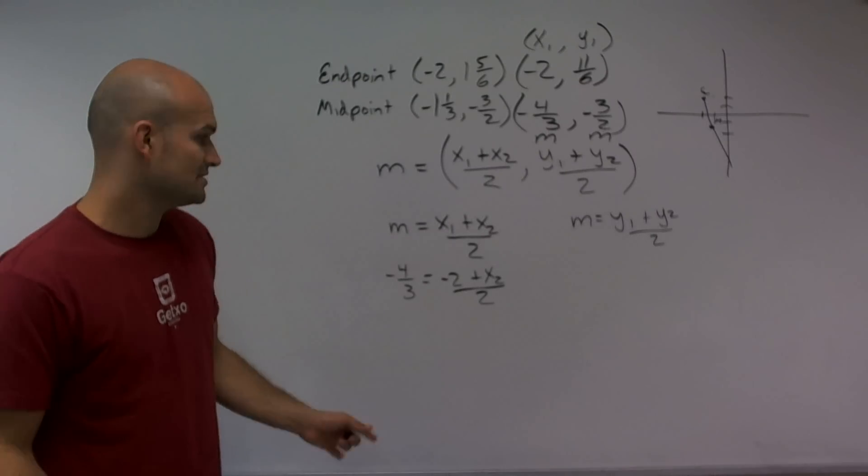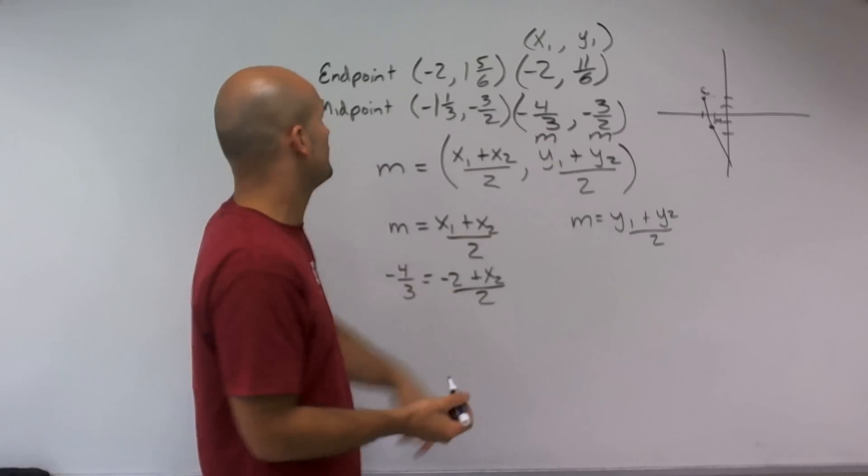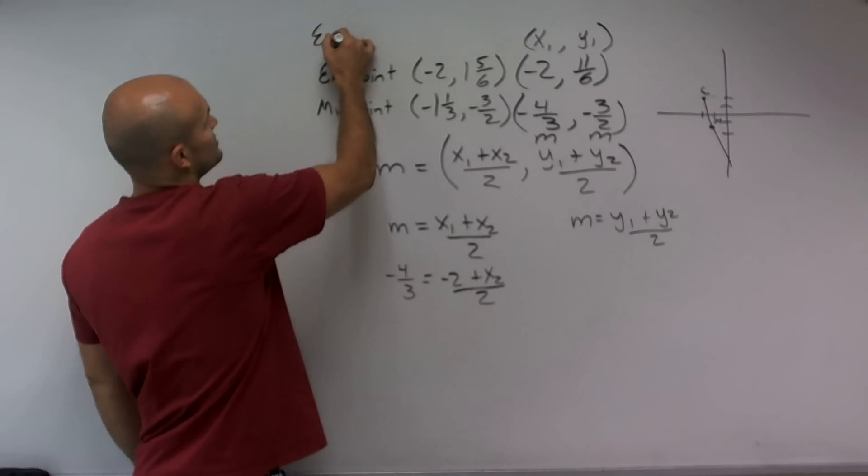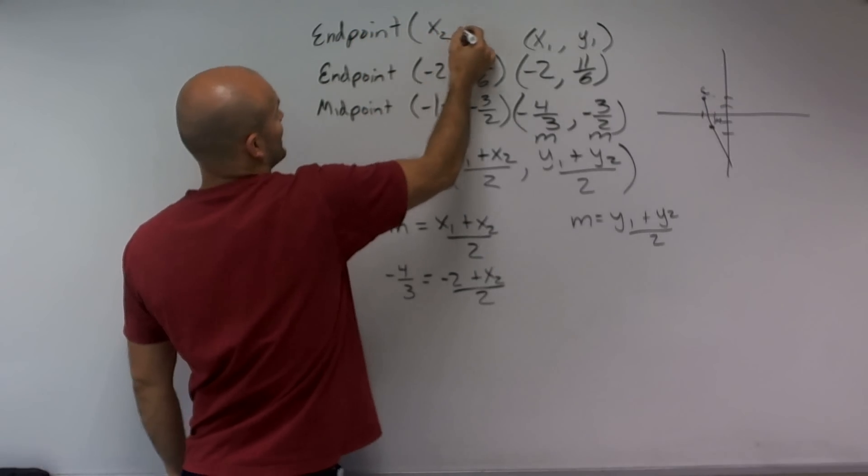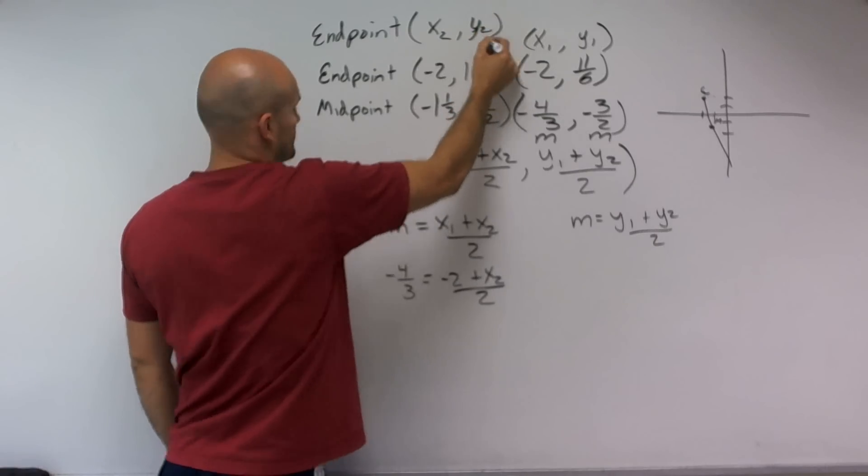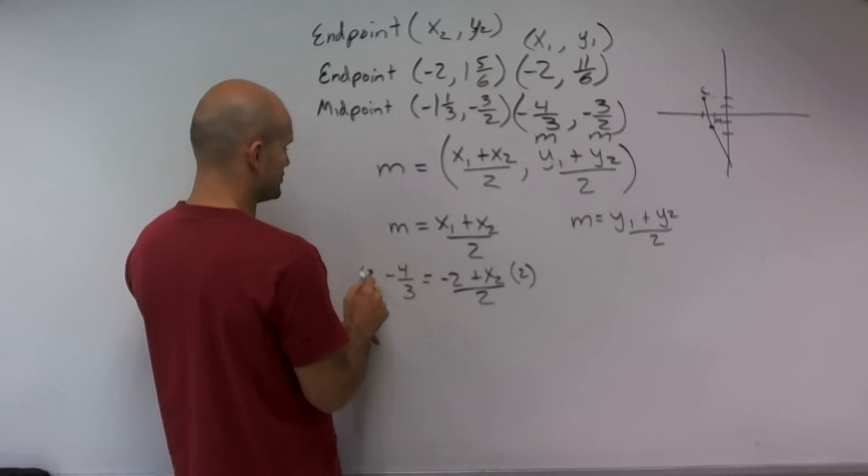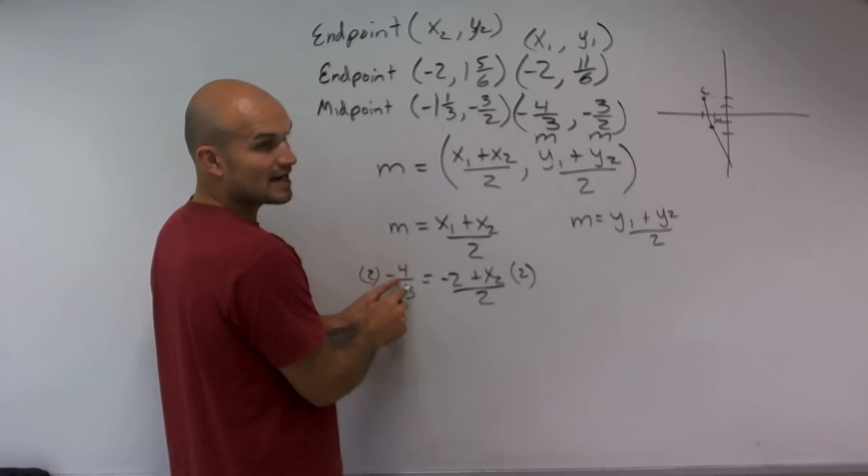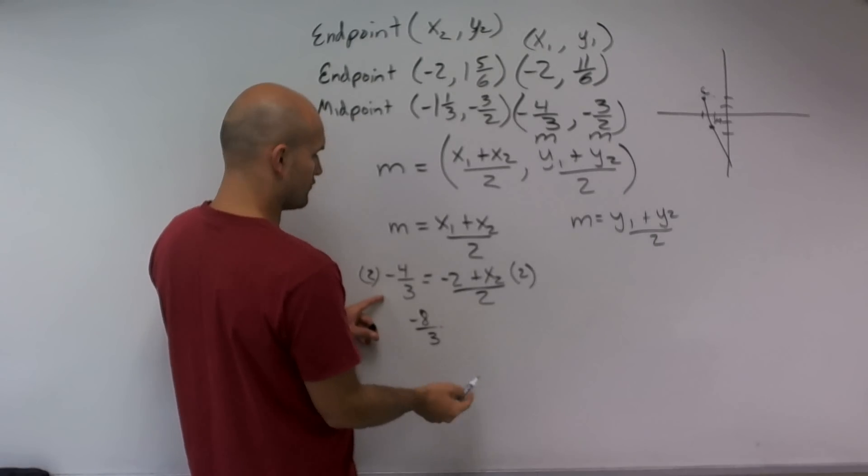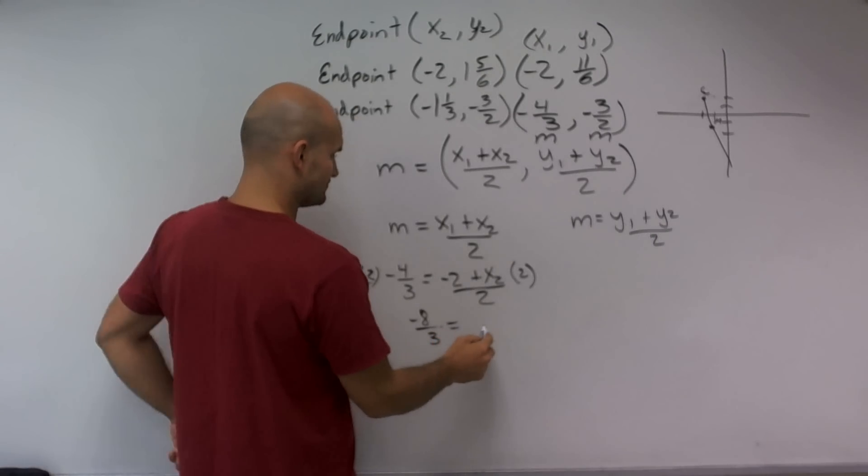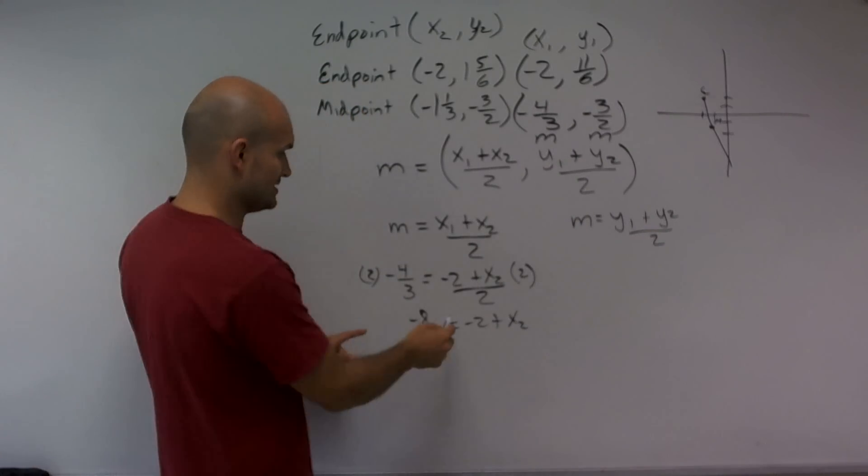So now what I'm going to have to do to solve this equation is just solve for x2 or the x value of my endpoint. So my endpoint that I'm going to try to find is going to be x2 comma y2. Therefore, to solve for this, I first need to get rid of the denominator. So I'll multiply by 2 on both sides. 2 times the numerator would give me negative 8/3 equals negative 2 plus x2.